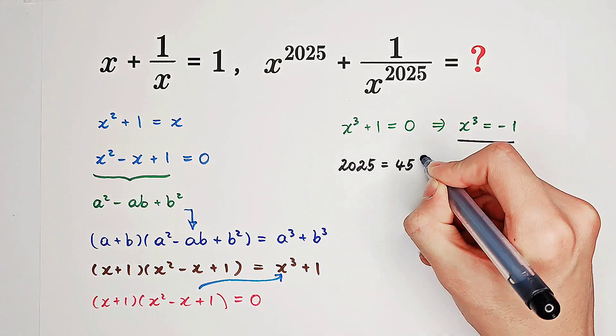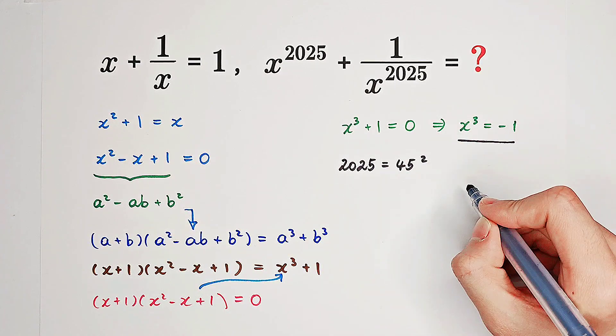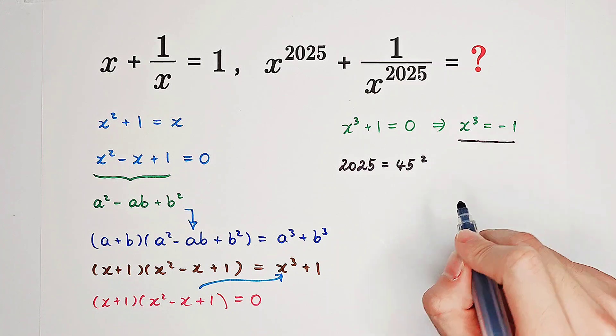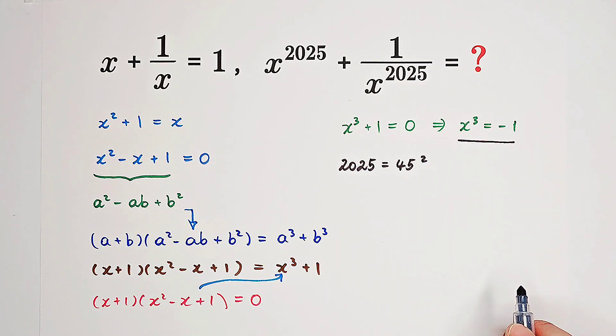It is 45 squared. 2025 is also the only square number in this century. So, 2025 is very precious.